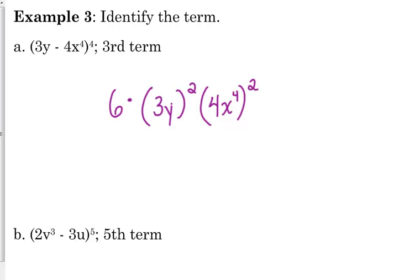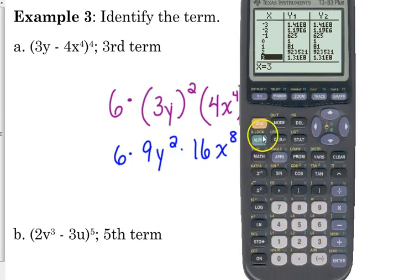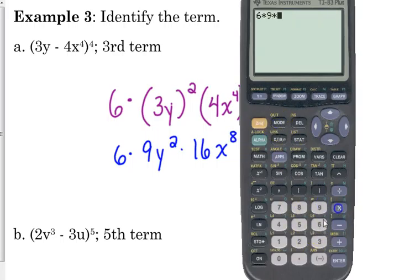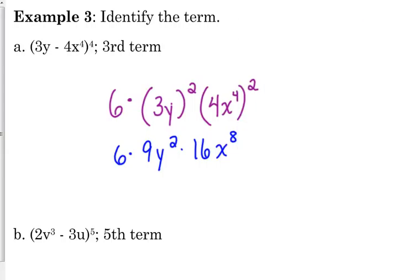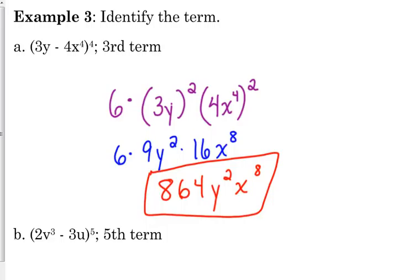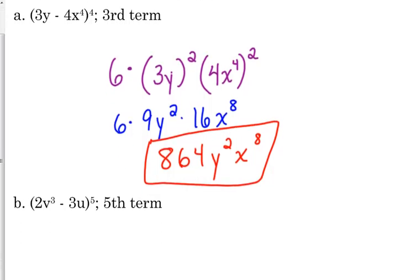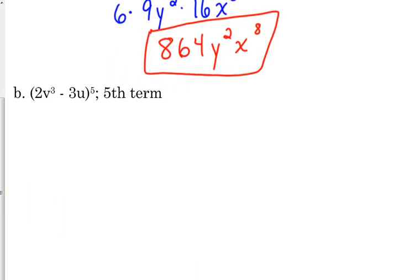And then all we have to do is simplify. So 3 squared is 9, 4 squared is 16, x to the fourth squared is x to the eighth. And then we just need to multiply 6 times 9 times 16, which is 864. So 864 y squared x to the eighth. We're going to do another one because I know that it's a lot of thinking without expanding this completely, but you don't want to have to expand it completely if they're just asking you about one single term.